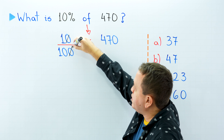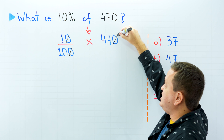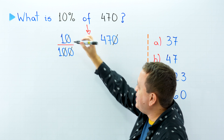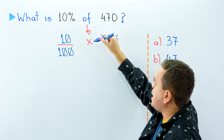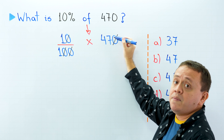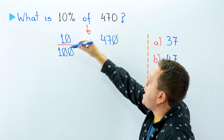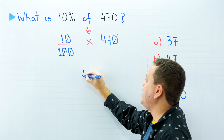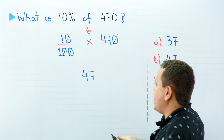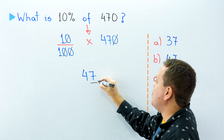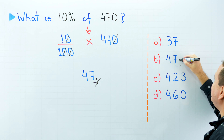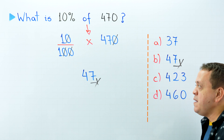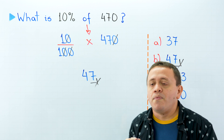Then we're going to simplify these numbers. We can simplify the zero at the top with the zero at the bottom. Finally, one times 47 equals 47 divided by one, which gives us 47. Our final answer is 47.